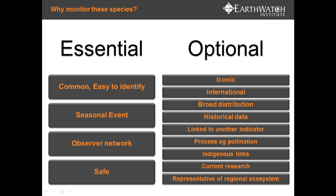Not all plants and animals are appropriate for monitoring with something like Climate Watch. We're looking at monitoring the phenology of a large range of species, but getting a large range of people involved in the data collection. Based on international experience for programs like Nature's Calendar that have been very successful in the UK, we have developed a set of selection criteria that determine which indicator species are included in Climate Watch — which plants and animals we want you to record on.